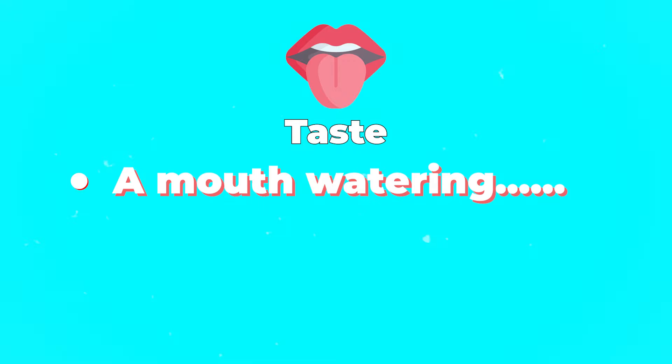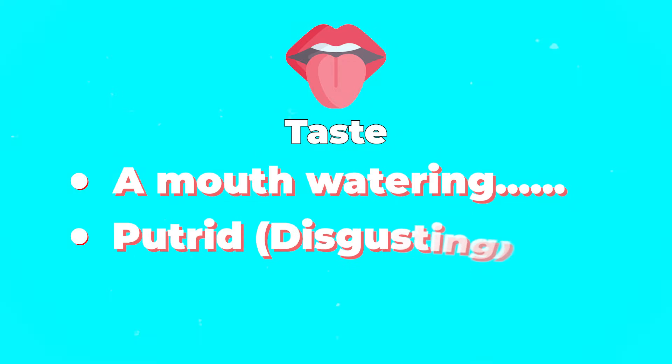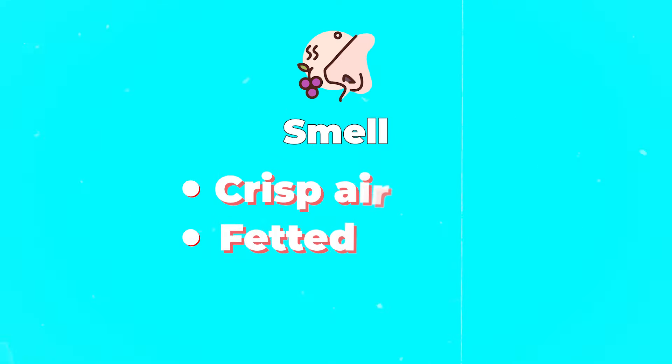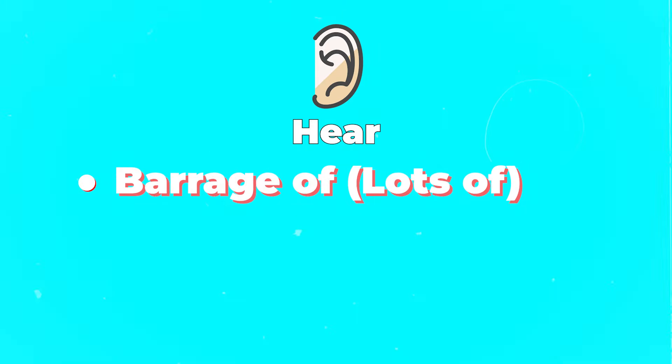For 'taste,' if something is nice you could say 'mouth-watering,' and if it's disgusting you could say 'putrid,' meaning vile. For 'smell,' you could describe a pleasant smell as 'crisp,' like the crisp air, or a negative smell as 'fetid.' For 'hear,' you could use 'a barrage of' for lots of sound, or 'the relentless onslaught of' for a negative sound.